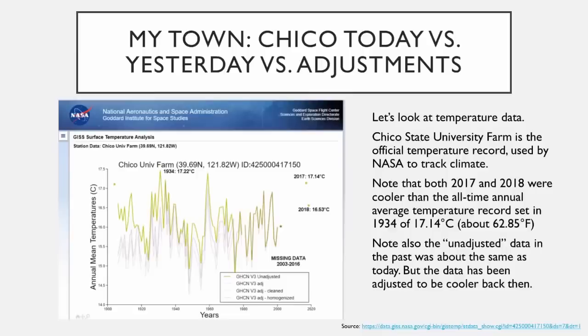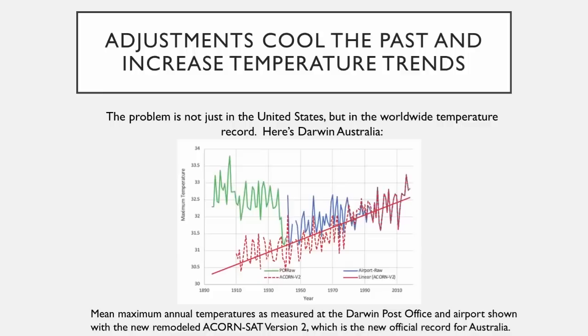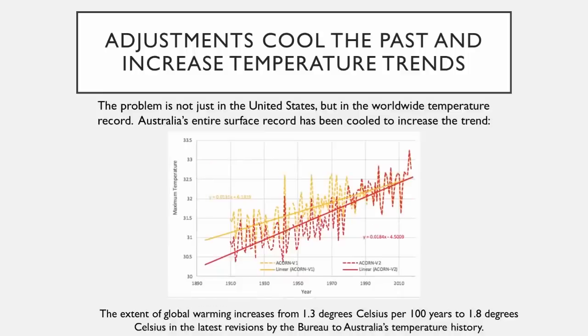Here we have the entire record for Australia. The adjustments have been made recently by a change in the dataset — it went from the amber to the red. The red has a steeper slope, and thus the climate warming factor based on this new data is higher. And this is happening all over the world, not just in Australia.